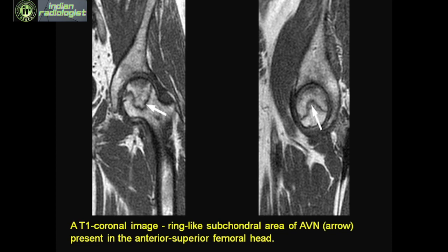Because of the hip pain and a relatively unremarkable plain radiograph of the femur, an MRI was asked for. We see a typical ring-like subchondral area in the femoral neck, which is nothing but avascular necrosis of bone (AVN). Why has it occurred? Long-term steroids result in AVN — there is evidence that it's probably a lipid-laden condition leading to ischemia of the femoral head.